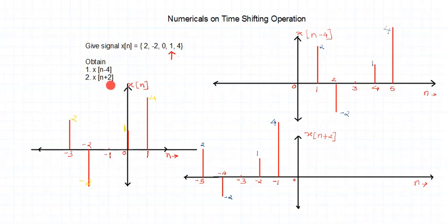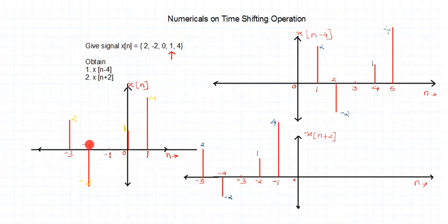Simply plot the remaining samples one after the other: they appear at 2, 3, 4, and 5. So the last sample at 1 shifted by 4 units appears at 5 — confirming the shift. For X(n + 2): plus sign indicates time-advanced signal, shifting to the left by 2 units. The starting sample at minus 3 shifted left by 2 units appears at minus 5. Sample at minus 2 appears at minus 4, and so on — maintaining magnitudes throughout.